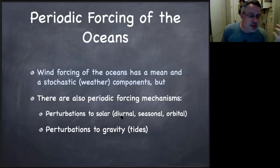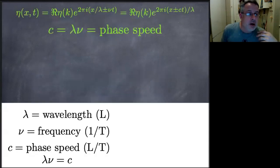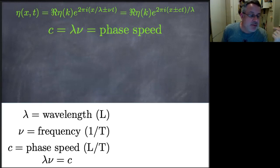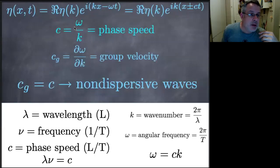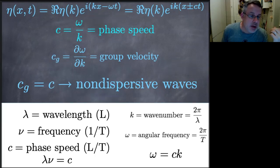There's a diurnal cycle in solar heating, a diurnal cycle in solar winds for the same reason, a diurnal seasonal cycle in solar heating, and a seasonal cycle in winds. Are there any waves that respond to that? We're thinking of things that have very low frequency, so they're going to have very long wavelength for the same phase speed, or maybe a different phase speed relationship. Remember the phase speed is the ratio of frequency to wave number; the group velocity is the derivative of frequency with respect to wave number. For non-dispersive waves, these two are equal; for dispersive waves, they're unequal.